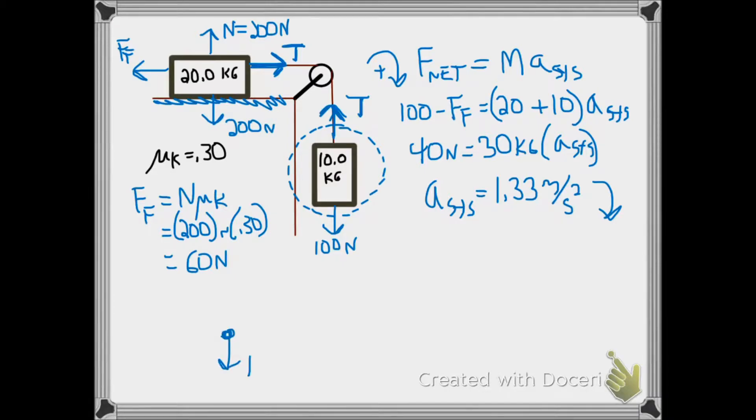When we isolate and have our new force diagram, we have just two forces, the tension pulling up, the 100 newton force pulling down. If our acceleration is down as positive, we're going to do F net equals MA, but we're just going to isolate on the 10 kilogram mass.